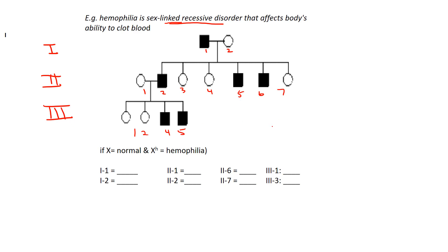That's how we identify these individuals. Because it's sex-linked, we must use X's and Y's in our pedigree. A normal X is written as just X, and X with superscript H denotes the hemophilia allele. A legend is just as important for these pedigrees as it was for problem solving.